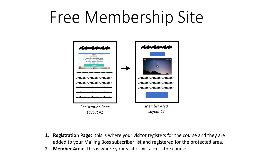The registration page is where your visitors register for the course and they're added to your mailing list subscriber list and registered to access the protected area. The member area is the protected area that your visitors will have access to once they've registered for your course. Those are the two main pages we're going to work with inside this free membership site.